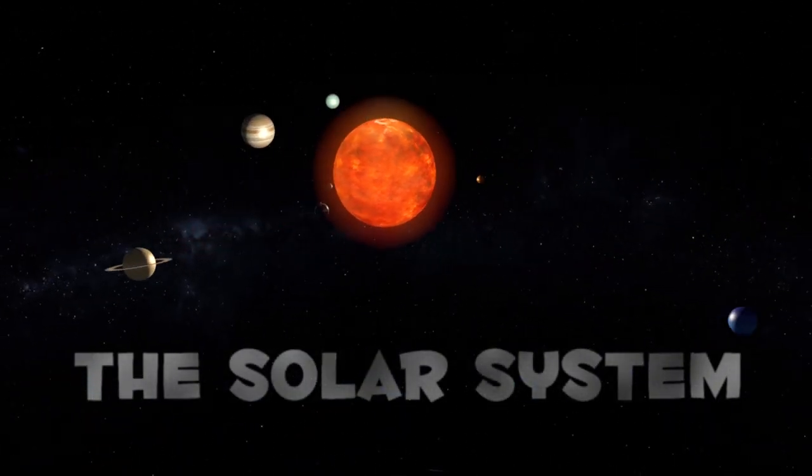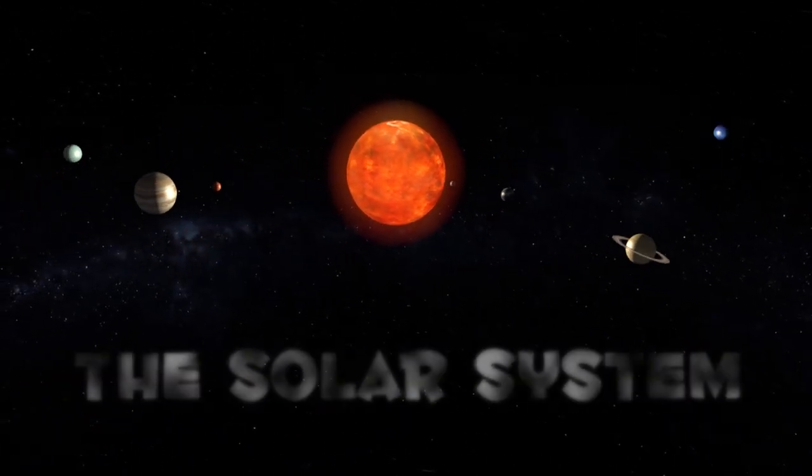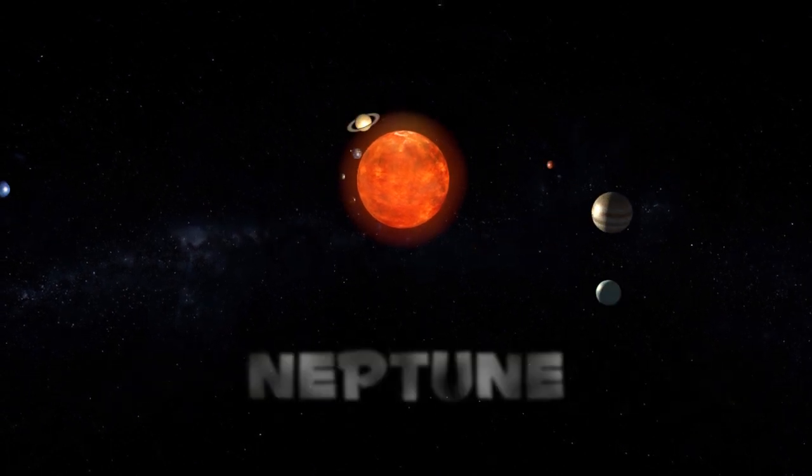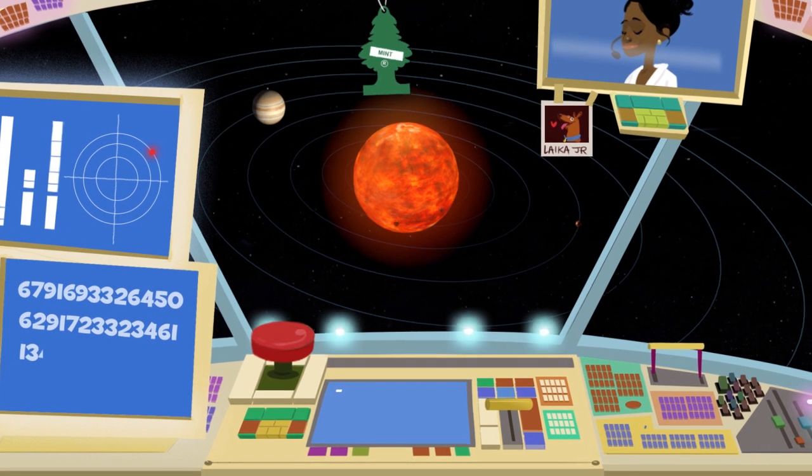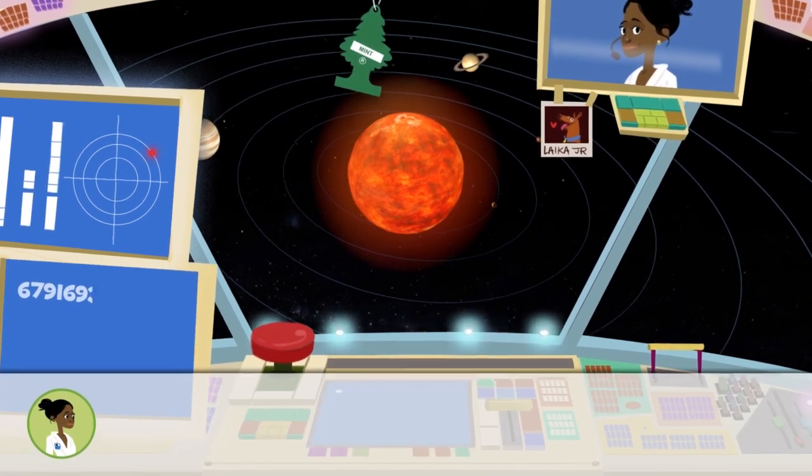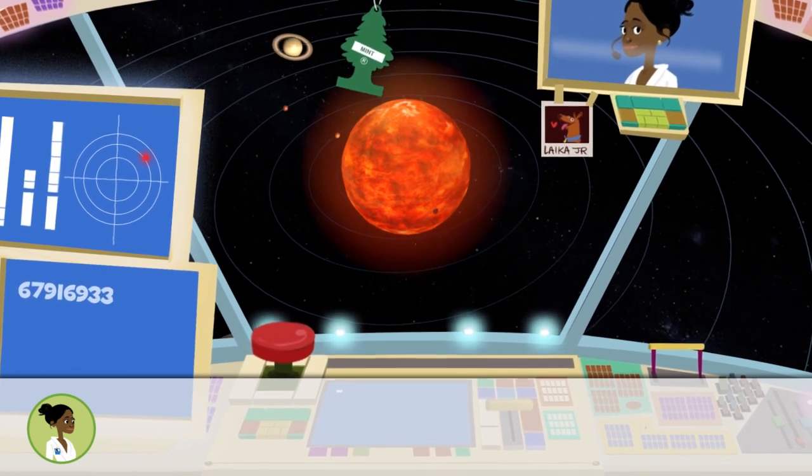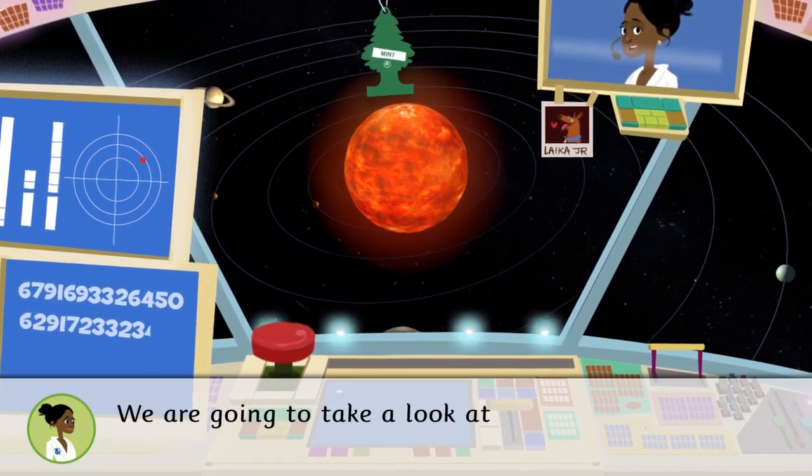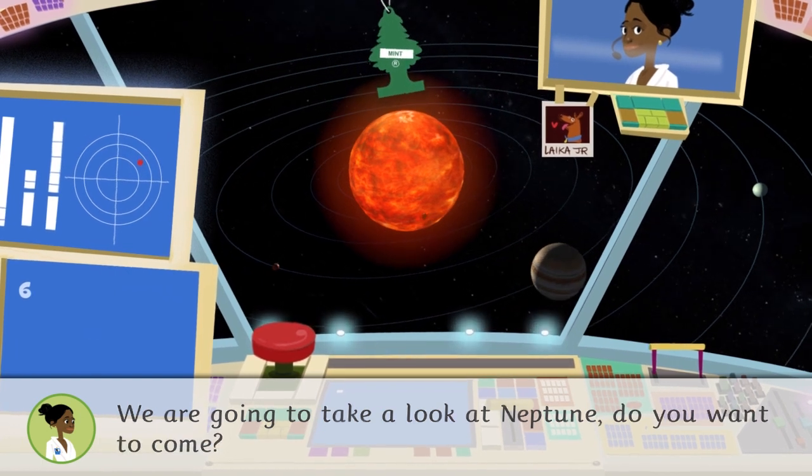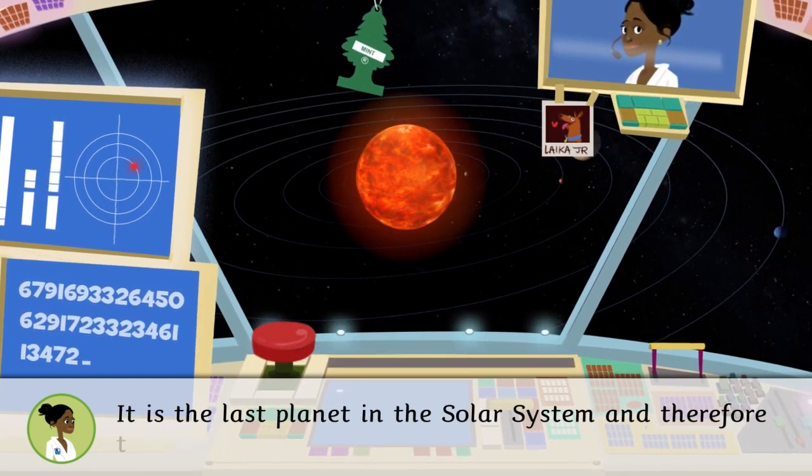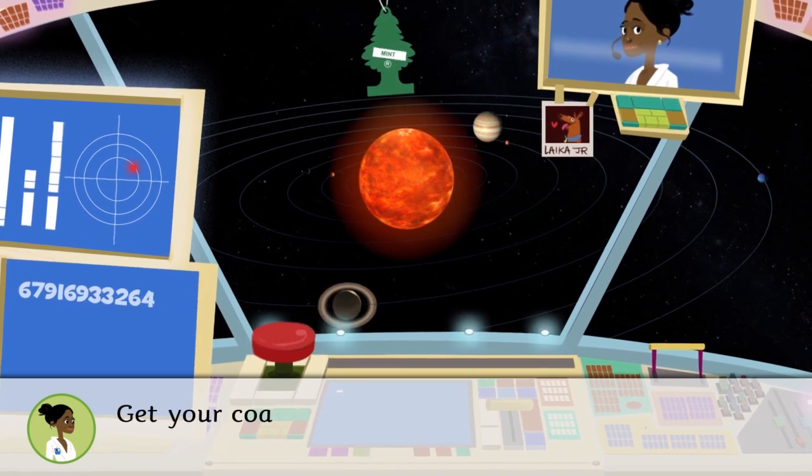The Solar System. Today we will travel to Neptune. You are looking at the Solar System. We are going to take a look at Neptune. Do you want to come? It is the last planet in the Solar System and therefore the coldest. Get your coat and let's go!